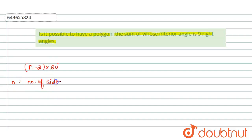Now in this question, it is given that the sum of interior angles is equal to 9 right angles. So what we will do, we will equate this formula (n - 2) × 180° with this value, which is 9 right angles. So 9 right angles means 9 × 90°.